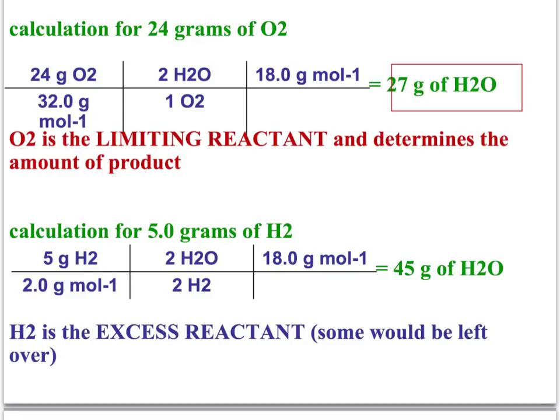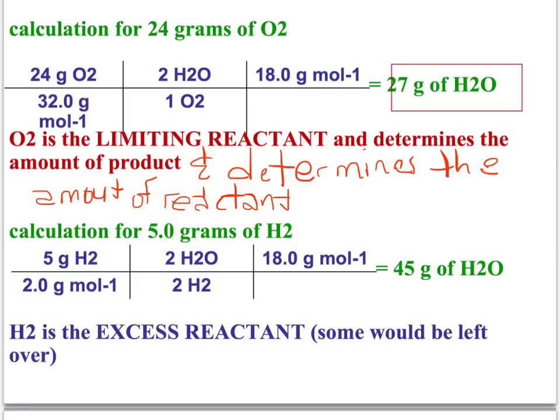Once again, still review from yesterday. So this shows us that O2 is a limiting reactant and it determines the amount of product that's produced and it also determines the amount of reactant used. And that's what we're going to learn today is how to use this limiting, which is the oxygen, to determine how much of the hydrogen was used. We see hydrogen here is excess, so we want to figure out how much of that was used.